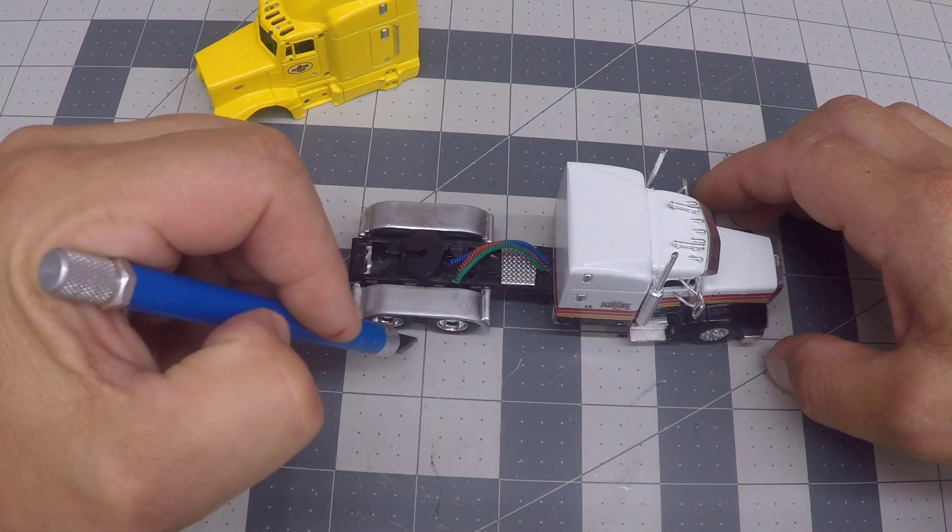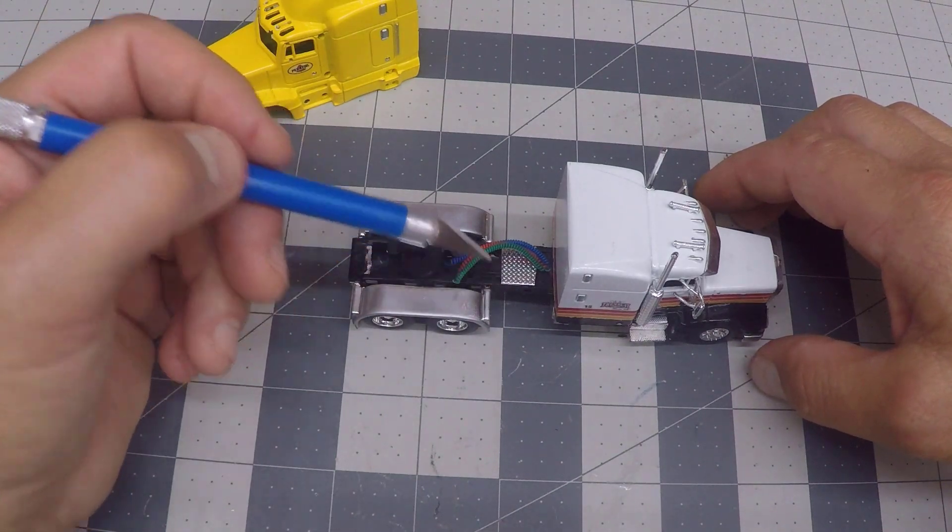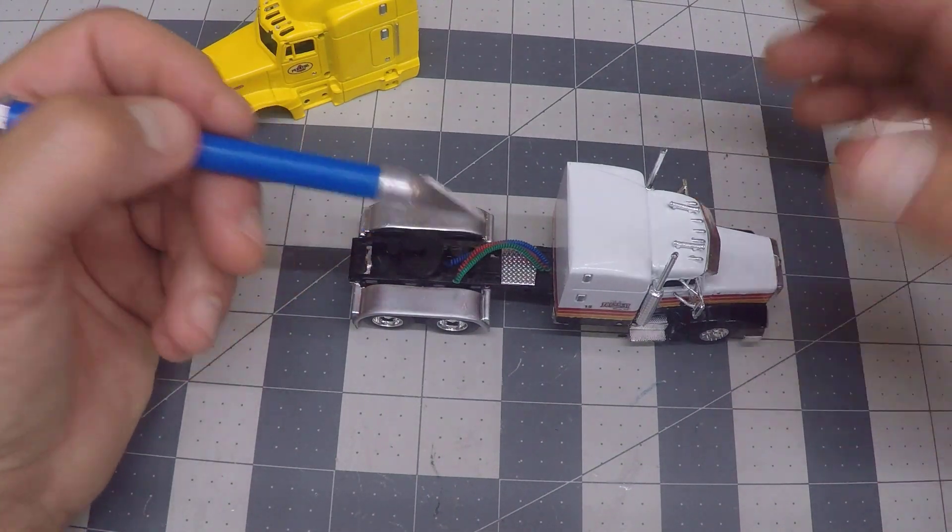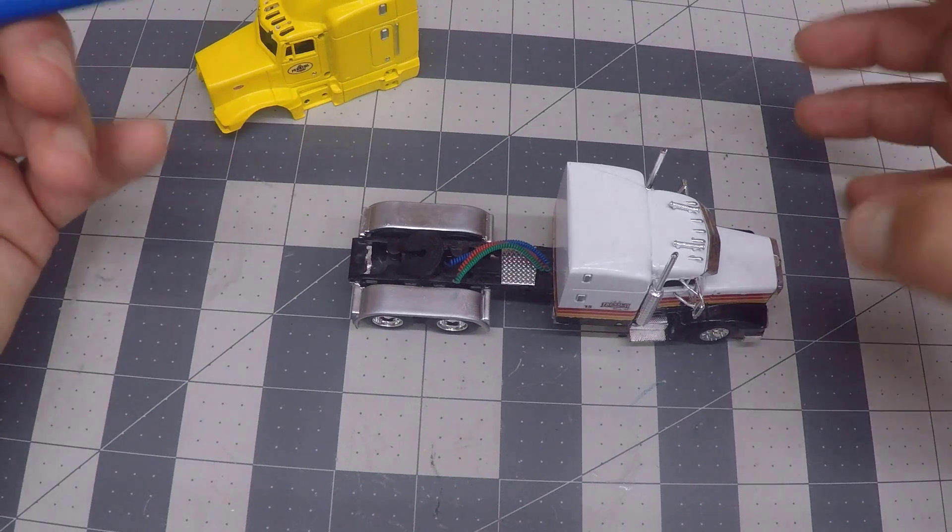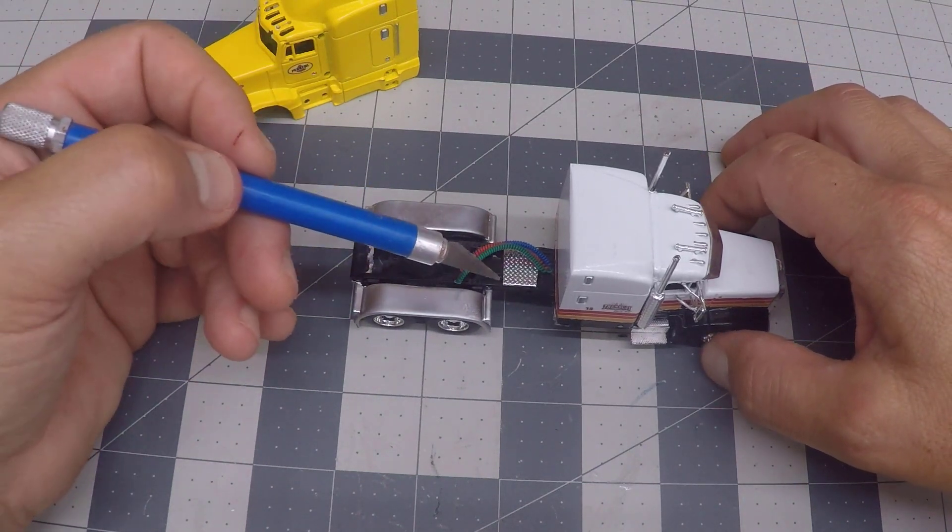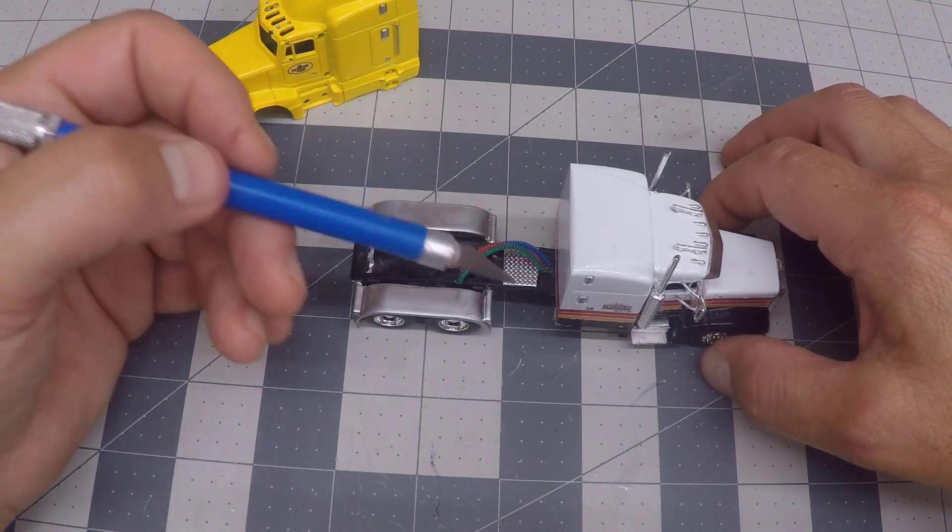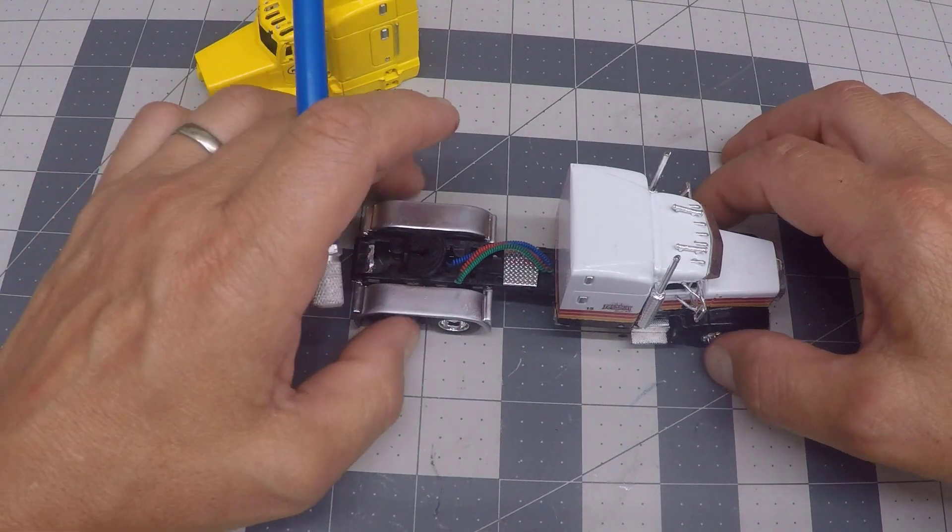So I took a little liberty and cut it down to three and three quarter inches from the center of the front wheel to the center of the tandems, which is 240 inches, which actually looks visually closer to the real truck than the measurements I was given.